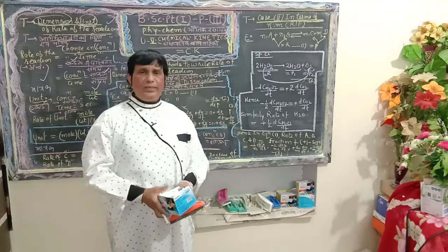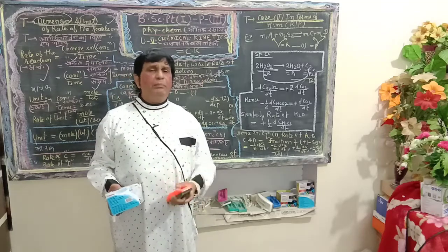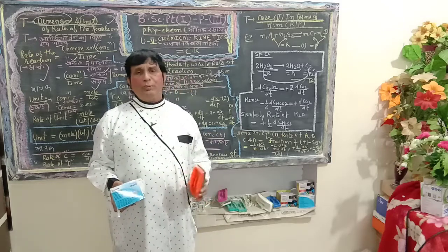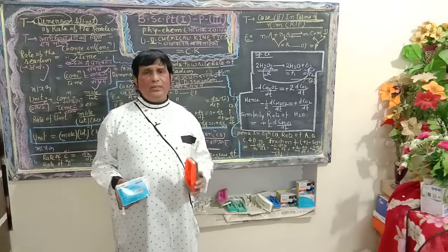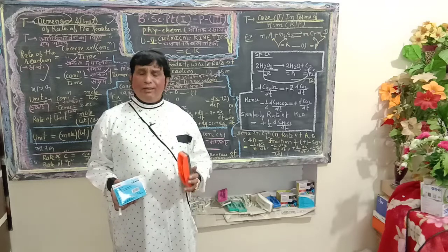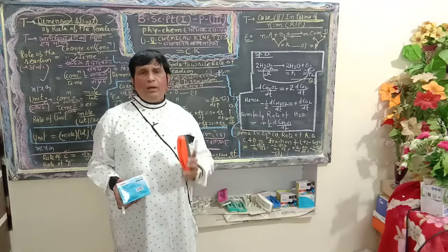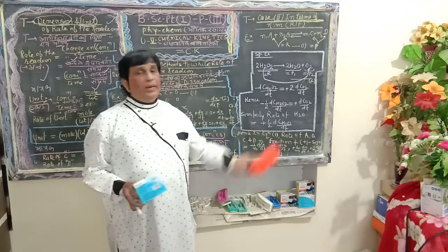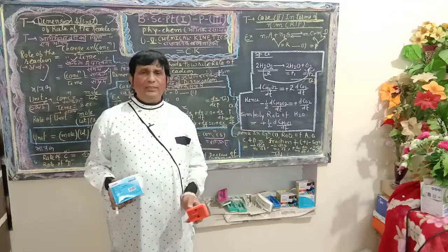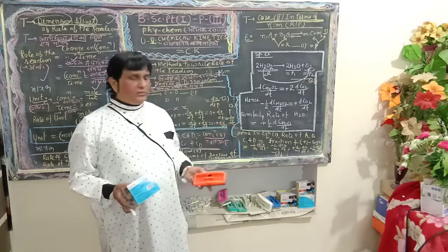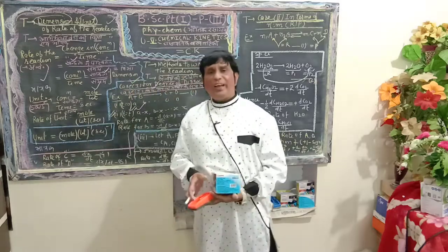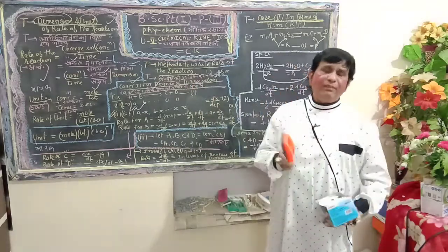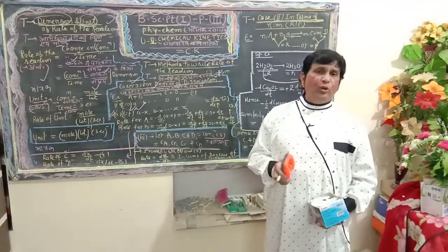Now let us come back to our previous lecture on methods to express the rate of reaction. We have already discussed two cases: Case 1 — expressing rate in terms of concentration; Case 2 — in terms of active mass. The next case I am going to define is in terms of degree of dissociation, and we will calculate its value.